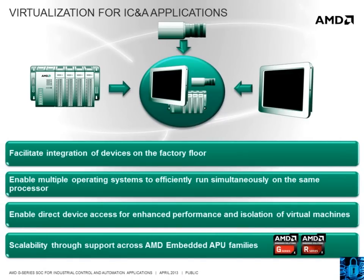In the past, many embedded applications have utilized multiple processing platforms in a system for security, performance, and reliability reasons. By running applications on completely separate processing platforms, applications could be fully isolated from one another. This would help prevent external or low-priority processes from accessing critical or sensitive data, as well as prevent those processes from interfering with real-time or reliable operation of critical system functions. Through virtualization, developers can now implement completely isolated application and operating system functions on a single processing platform, enabling less complex, lower power, and lower cost system implementations.